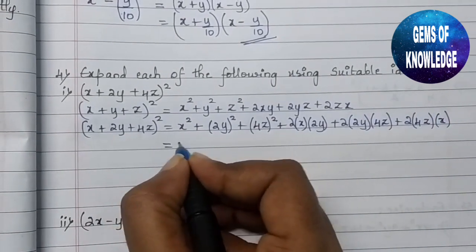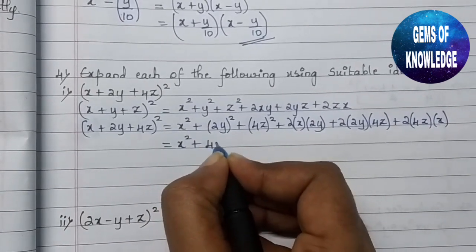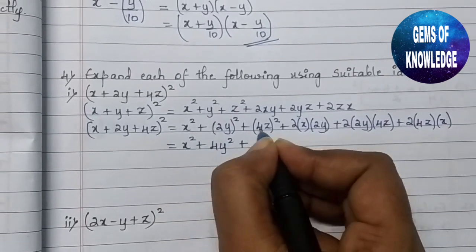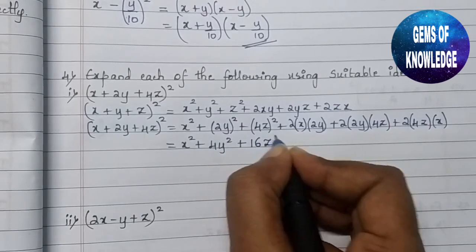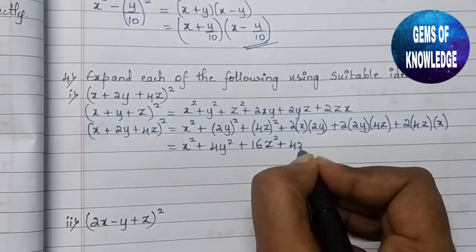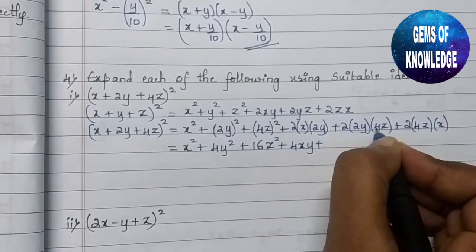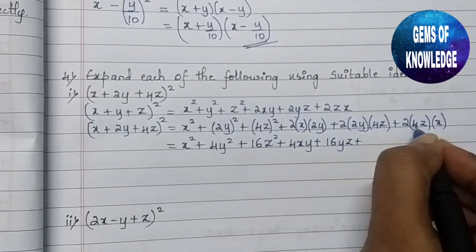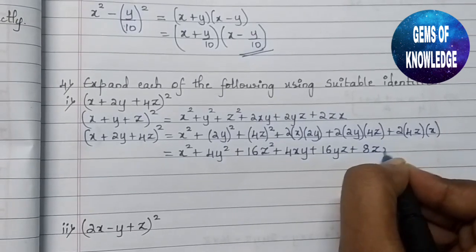Opening this up: x² + 4y² (since 2² = 4) + 16z² (since 4² = 16) + 4xy + 16yz + 8zx.